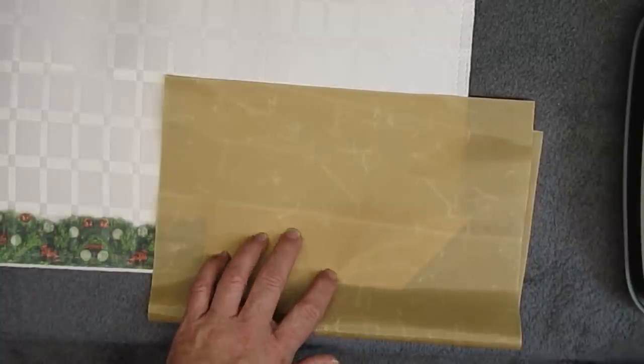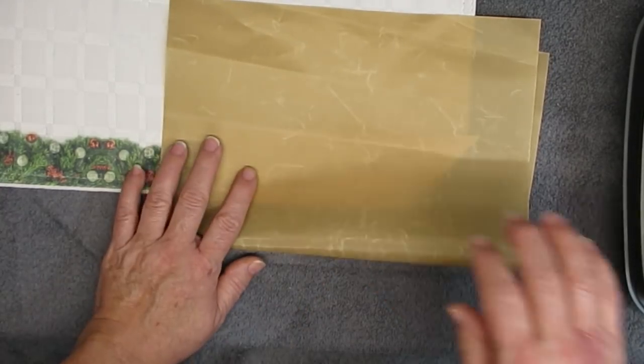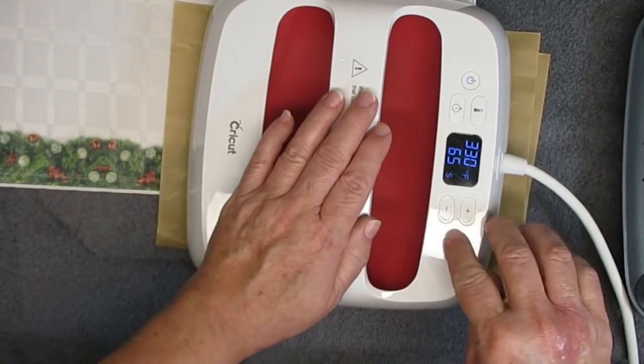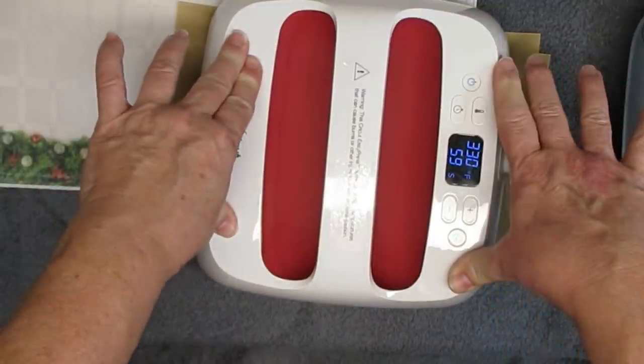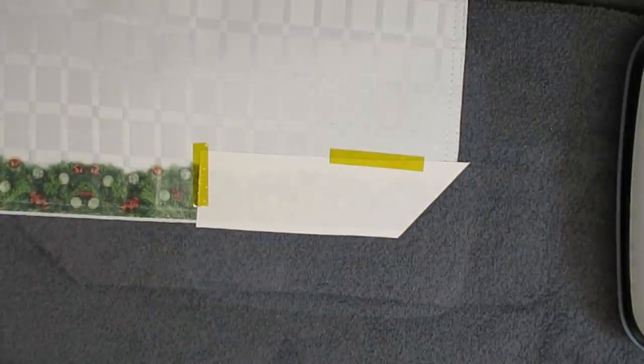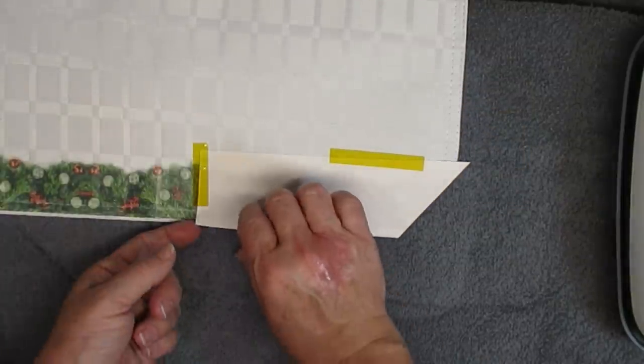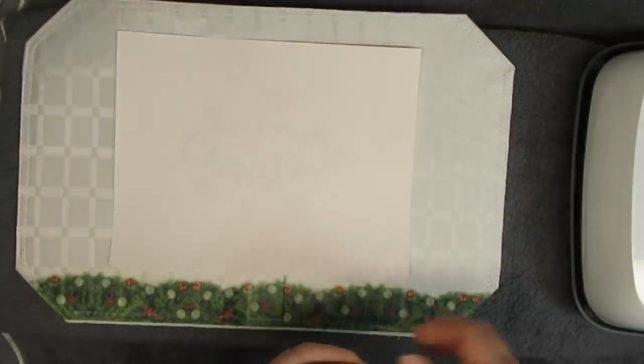I'm using my Cricut EasyPress. For sublimation you need to use a press like this that's really hot. You need it to get up to about 340 to 345 degrees. I'm doing mine at 330 and I'm actually going to be doing it for about 90 seconds and that just seemed to work for me. Use the instructions on any of the sublimation paper that you get. You also need a specific EcoTank printer and you need specific ink. I've got all the information for the Hippo products that I use down in my description box.